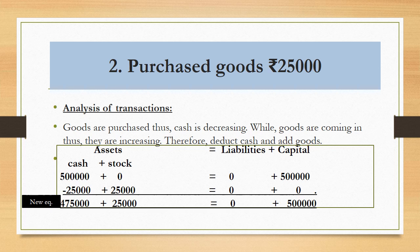In the new equation, cash is 4,75,000 and stock is 25,000, so the total on the asset side is 5 lakh. The same amount is on the other side — both sides are equal, which means whatever we have done so far is correct.